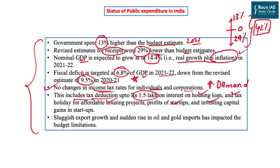The government has also provided tax deductions up to 1.5 lakh to boost different financial sectors and the industrial setup. However, sluggish export growth in the past few quarters and a sudden rise in oil and gold imports has increased the current account deficit, impacting budget allocation. All these points show certain limitations in the current status of public expenditure in the country.